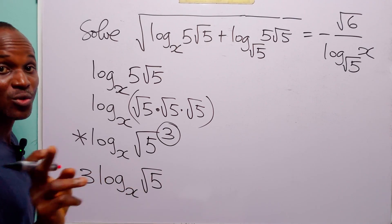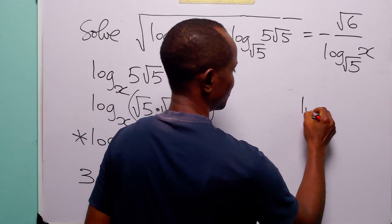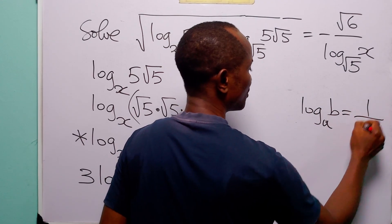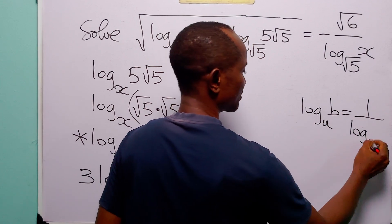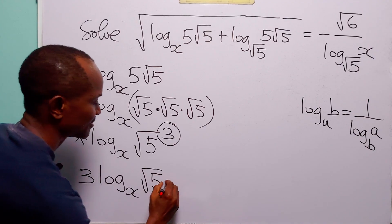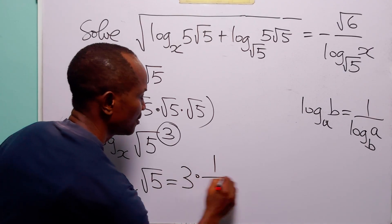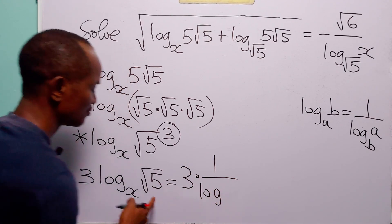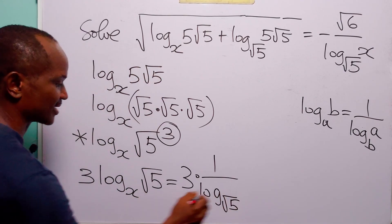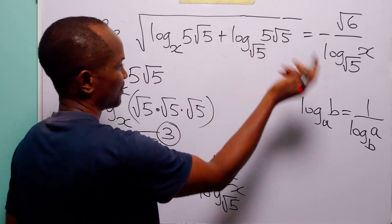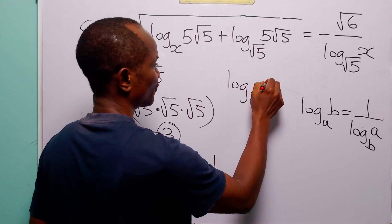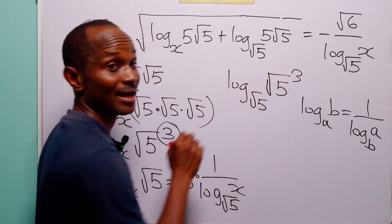But now I want to remove x from the base of this logarithm. So let us recall that log to base a of b is equal to 1 over log to base b of a. So this term is the same as 3 times 1 over log to base root 5 of x. In this term, we can write this as log to base root 5 of root 5 to the power 3.